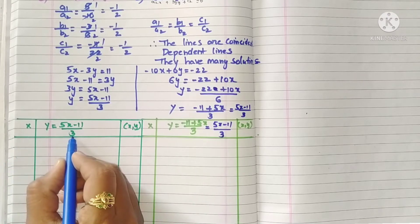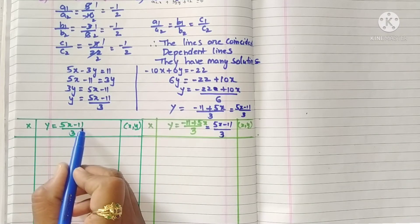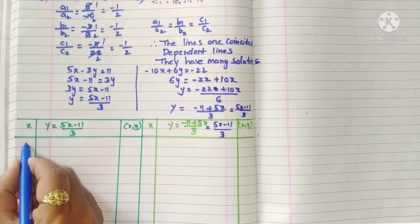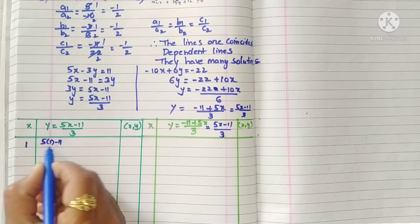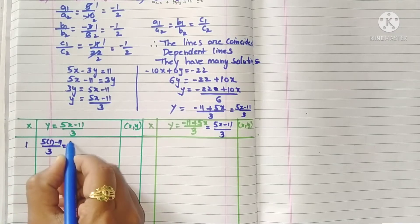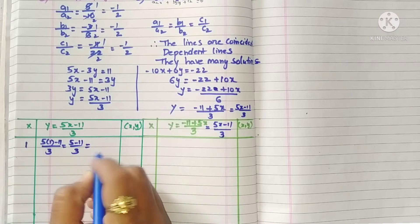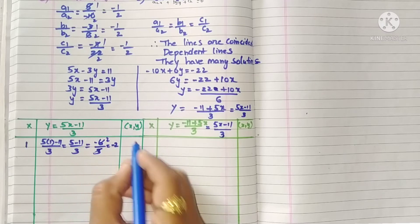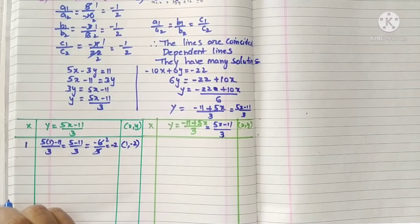We will take x as 1. So 5 into 1 minus 11 by 3, that is 5 minus 11 by 3, which is minus 6 by 3, so this is minus 2. X value 1, y value minus 2.